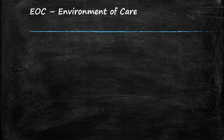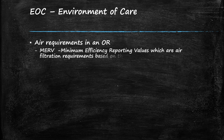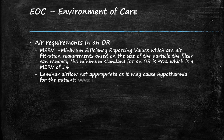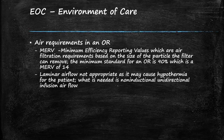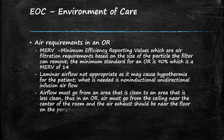Air requirements in an OR: MERV, or minimum efficiency reporting values, are air filtration requirements based on the size of the particle the filter can remove. The minimum standard for an OR is 90%, which is a MERV of 14. Laminar airflow is not appropriate as it may cause hypothermia for the patient. What is needed is non-inductive unidirectional airflow. Air flow must go from an area that is clean to an area that is less clean; in an OR, air must go from the ceiling near the center of the room, and the air exhaust should be near the floor at the periphery of the room.